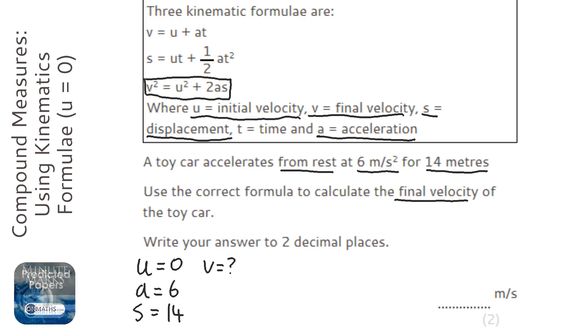So V squared equals U squared, which is just zero squared, plus two times A, which is six, times S, which is 14. So that's going to be, and we can use a calculator for this, two times six, times 14, which is 168.